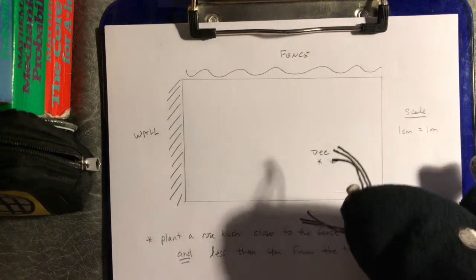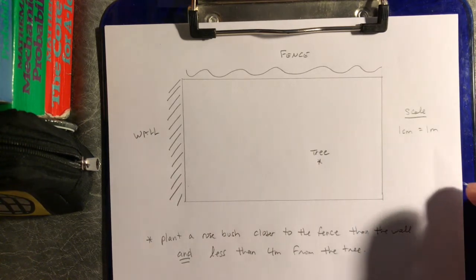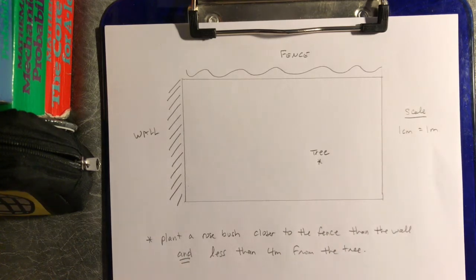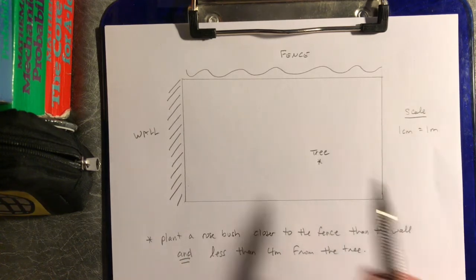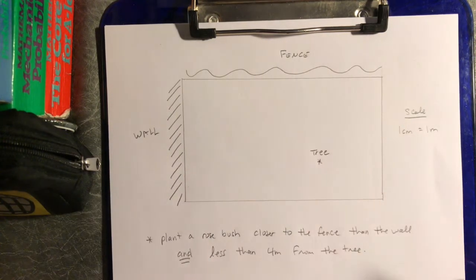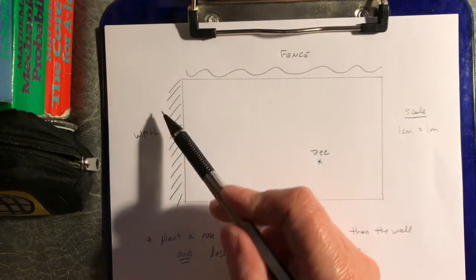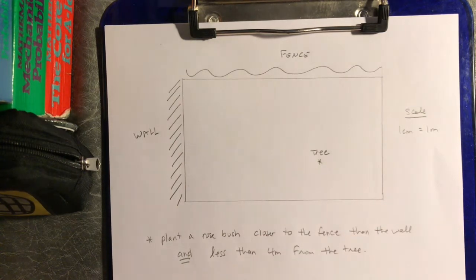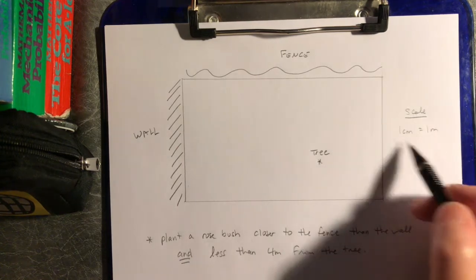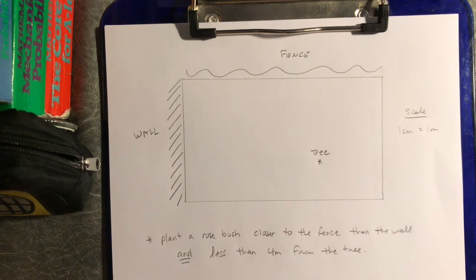Hey again! I'd like to do some worked examples of loci questions — however you want to pronounce that. There are two scenarios I'd like to look at. One involves a garden, which is more or less rectangular. You have a fence along one side and a wall along the other, with a tree over here. This is a scale drawing of the garden, and the scale is one centimeter represents one meter in real life.